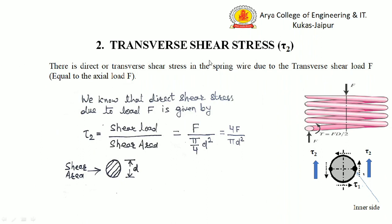The second major stress is the transverse shear stress. To balance the axial force F, an equal and opposite force F is produced at the section. This force is tangential to the section and produces transverse shear stress Tau 2. We know that Tau 2 = shear load / shear area = F / (π/4 d²), which gives Tau 2 = 4F / (π d²).